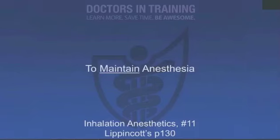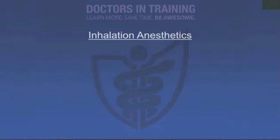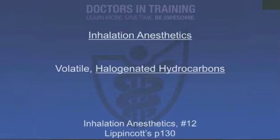The main way inhaled anesthetics are used is after induction with an IV medication, then used to maintain the anesthesia. They're well liked because they can be turned off and on very rapidly, and you can adjust their dosing easily by changing the concentration in the inhaled mixture. The modern inhaled anesthetics are volatile halogenated hydrocarbons ending in '-ane,' with halothane being the standard bearer. Nitrous oxide is also used and is in its own category.